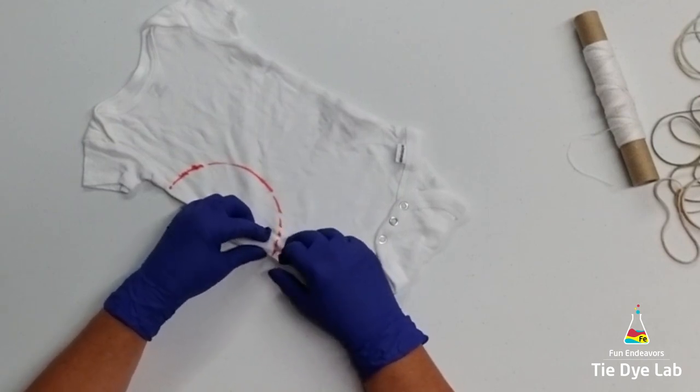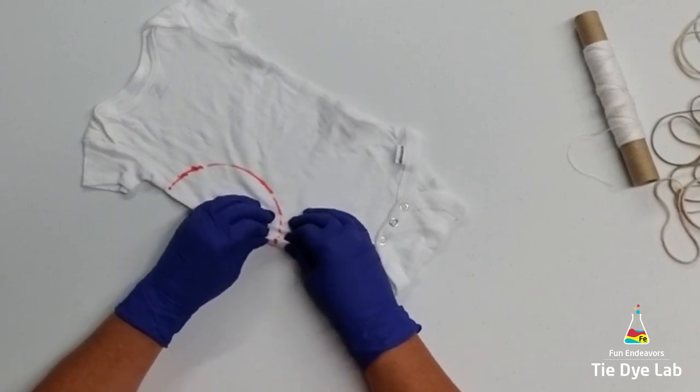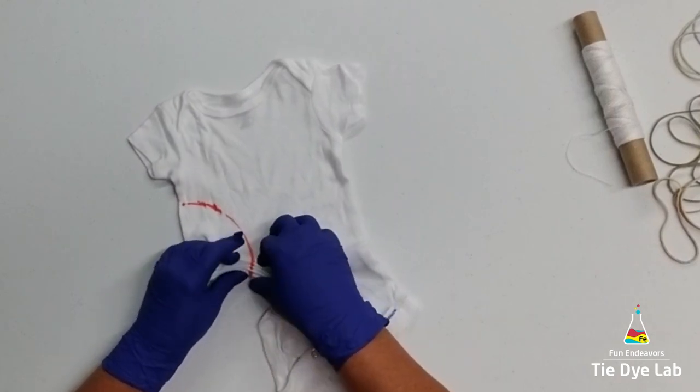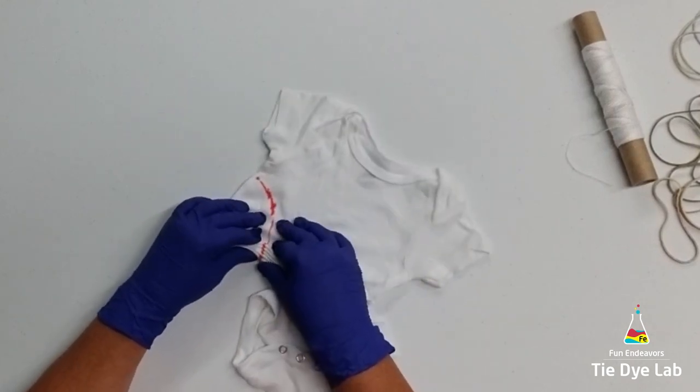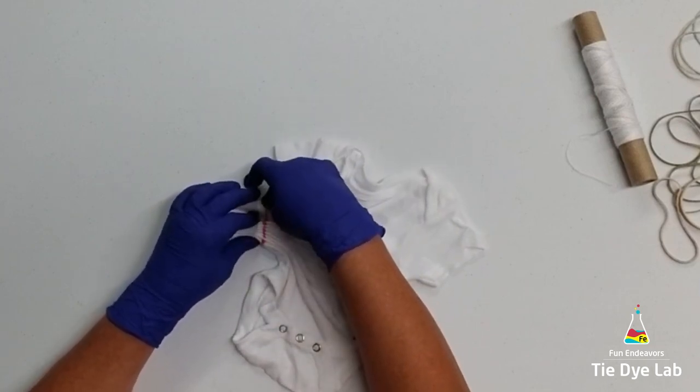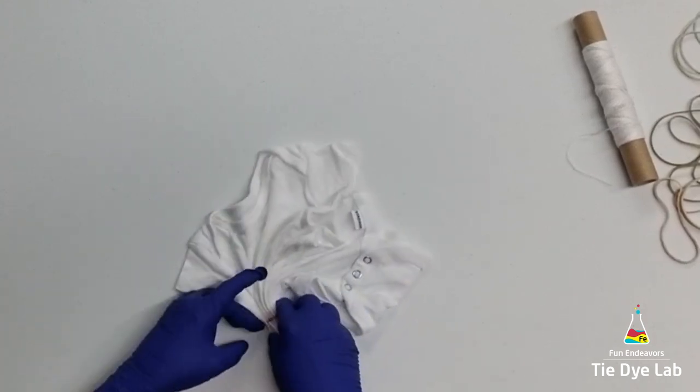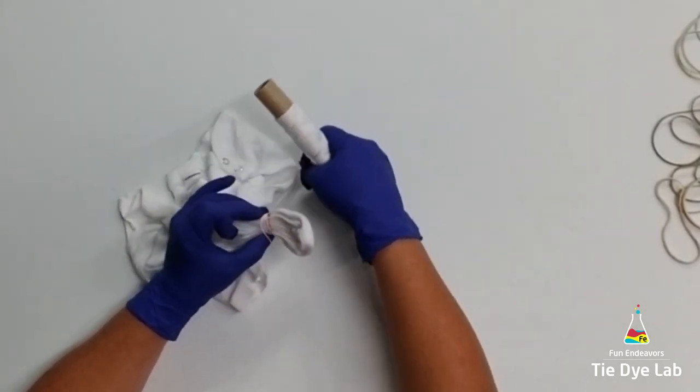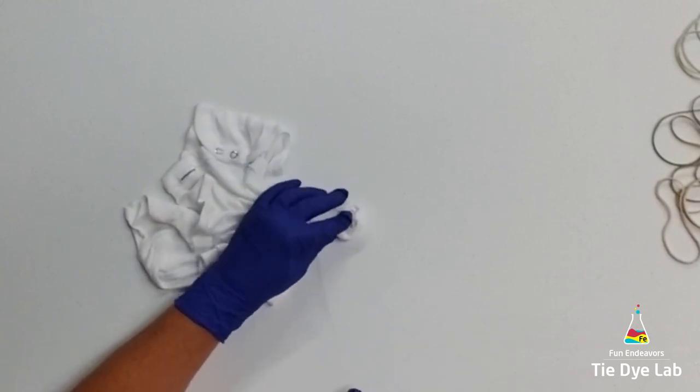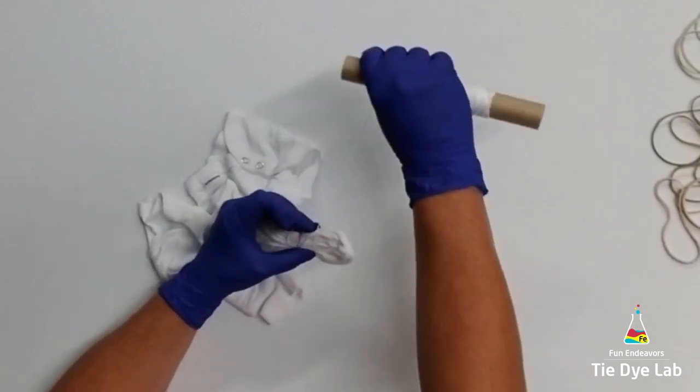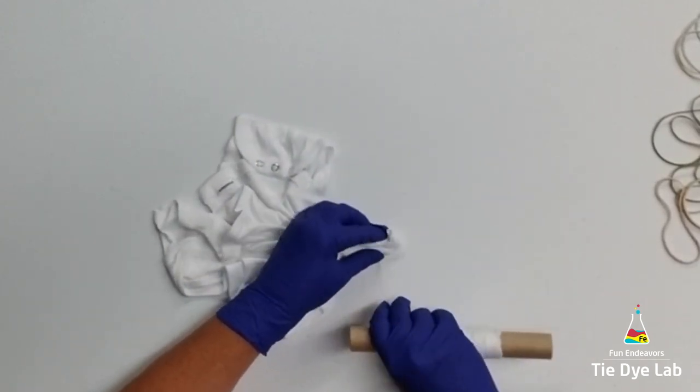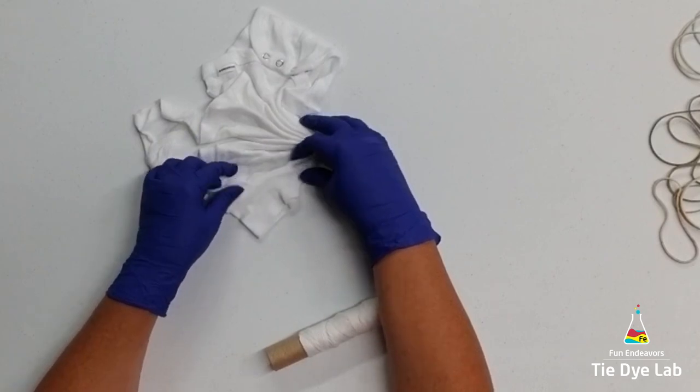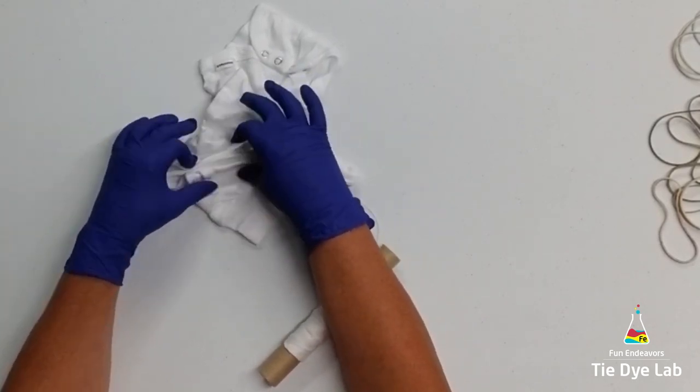Then I'm going to fan fold this line and tie it up with some kite string. The rest of the onesie I'm going to fan fold as well and tie it up with kite string too.